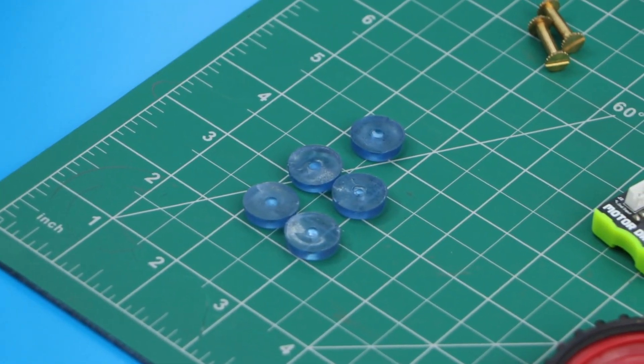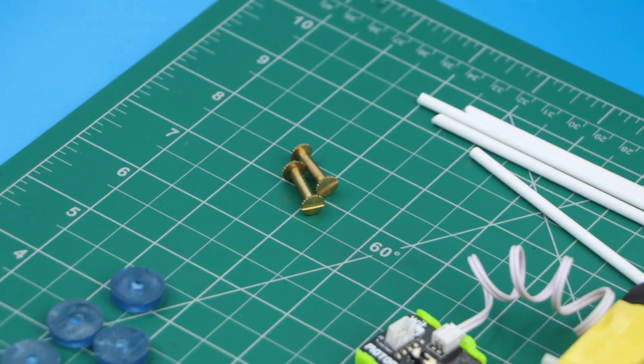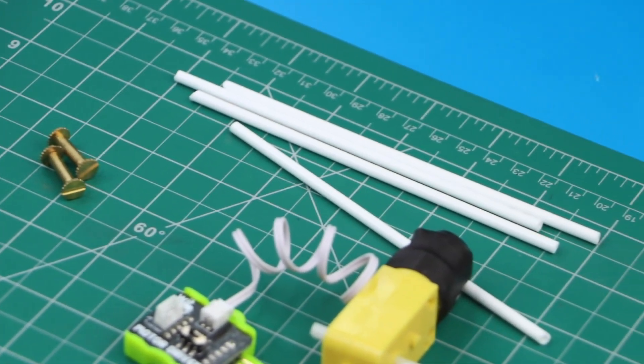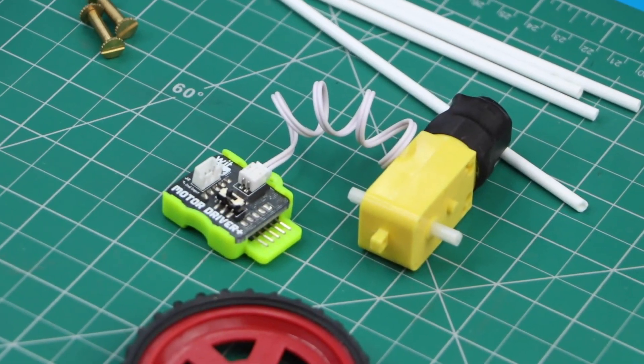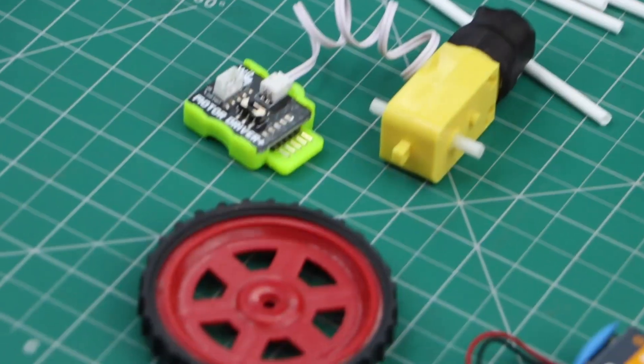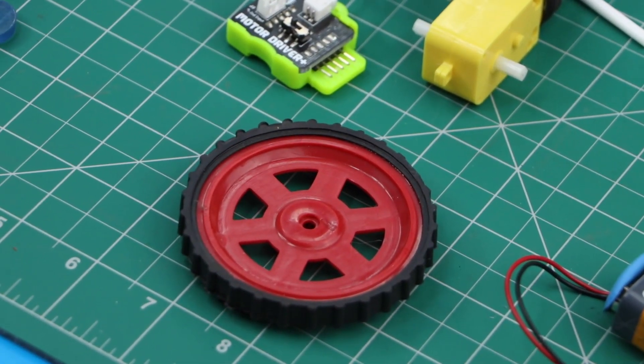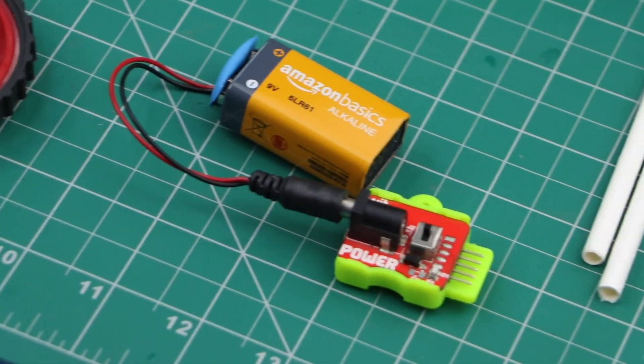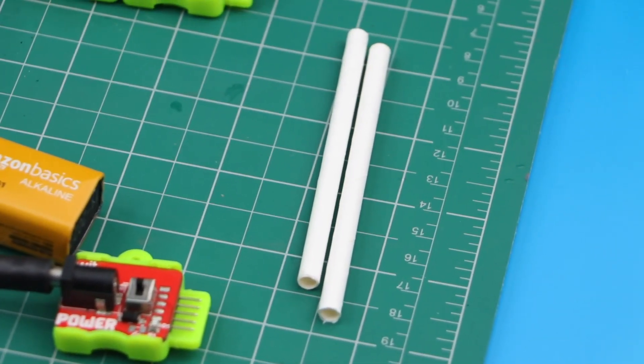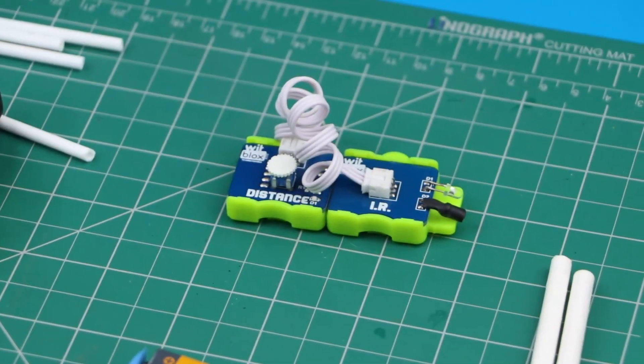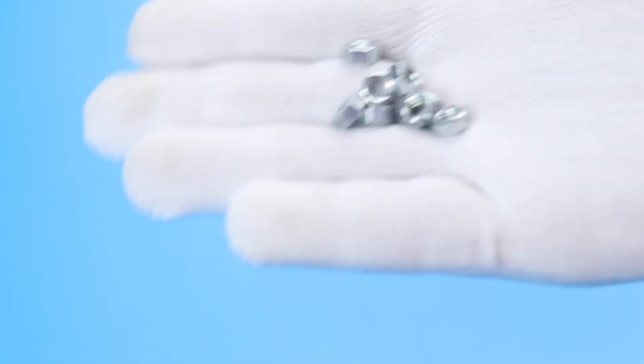In this project, we are using a rubber gasket, copper screws, plastic straws, motor driver blocks, wheel, power blocks, paper straws, distance blocks and nuts.